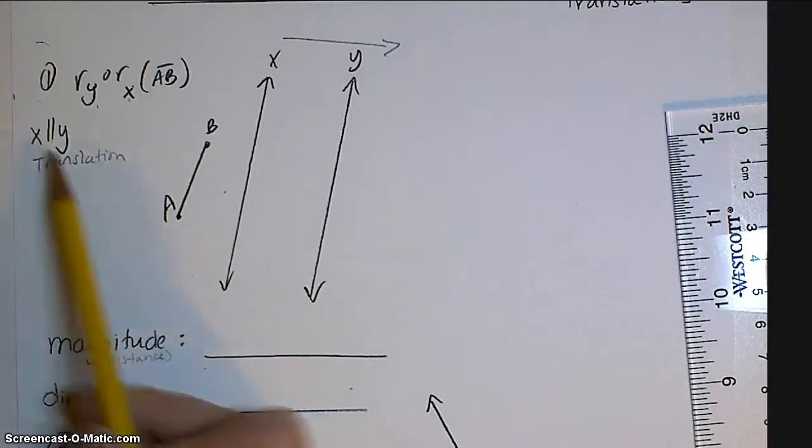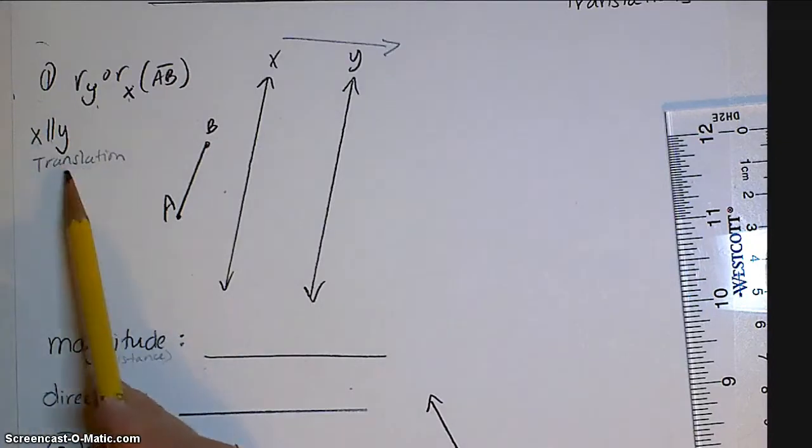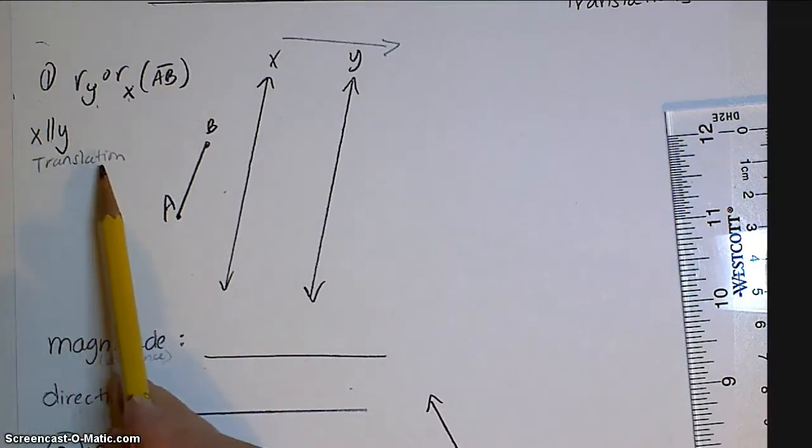A couple things to note. First of all, this tells us x is parallel to y, so that's how we know that this is a translation. And then we want to figure out which way we are translating.